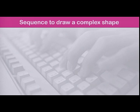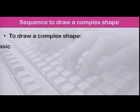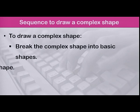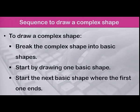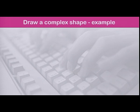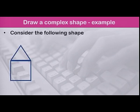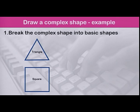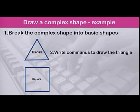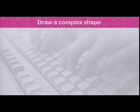So, how do we proceed to draw a complex shape? To draw a complex shape, break the complex shape into basic shapes. Start by drawing one basic shape. Start the next basic shape where the first one ends. Let us see an example to illustrate this. Consider the familiar shape we saw previously. Breaking the shape into basic shapes gives a triangle and a square. Start by writing commands to draw the triangle, then write commands to draw the square. Watch the following animation that shows how this is done.